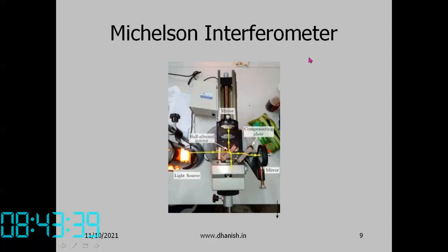This is a Michelson interferometer. There is a half-silvered mirror and a light source. Half of the light goes back and comes down, while the other part goes up and comes back. Between these two reflected beams there will be interference.